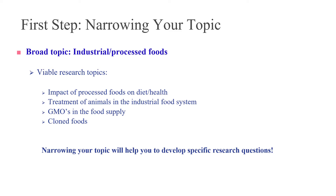For example, imagine sitting down to write a paper on the industrial food system versus writing a paper about cloned foods, the impact of cloning in the food system, or GMOs in the food supply, or the treatment of animals in the industrial food system, or the impact of processed foods on diet and health. Each of those would be a good topic for a six to ten page paper, but they are all very different topics. The first step is to figure out what aspect of this topic you're interested in exploring in more detail.